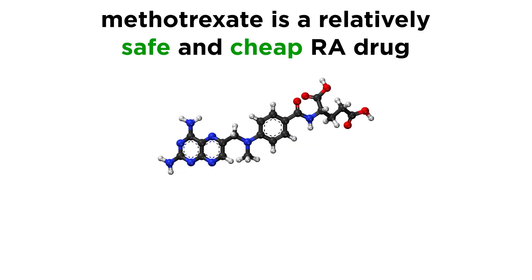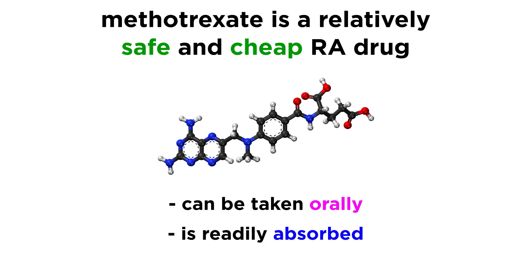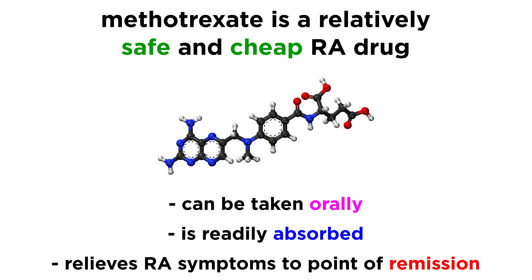Despite these notable side effects, methotrexate is a relatively safe and cheap drug. In contrast with the biologic class of DMARDs, methotrexate can be taken orally and is readily absorbed, thereby simplifying dosing. Most importantly, methotrexate is incredibly effective at relieving RA symptoms to the point of disease remission, which is quite a surprise for a drug originally designed to fight cancer.